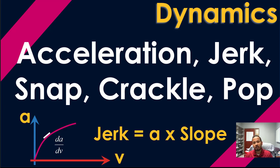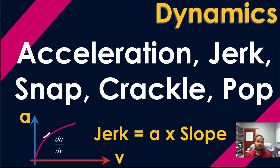Hello friends! Today we're going to talk about some higher order derivatives of position — for example, third order, fourth order, fifth, and sixth order derivatives. In mechanics these higher order derivatives do exist, but we don't necessarily teach them in our dynamics courses or widely use them. They do exist, and they have names: jerk, snap, crackle, pop.